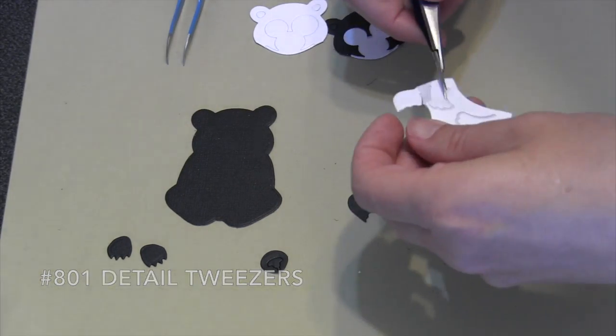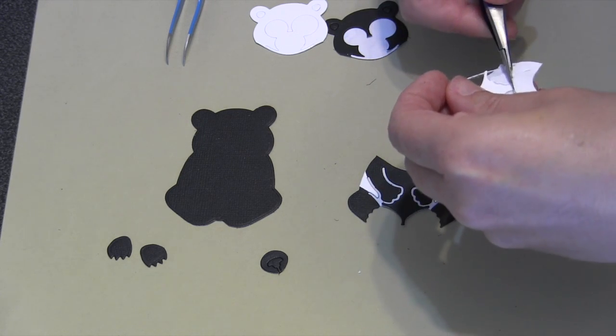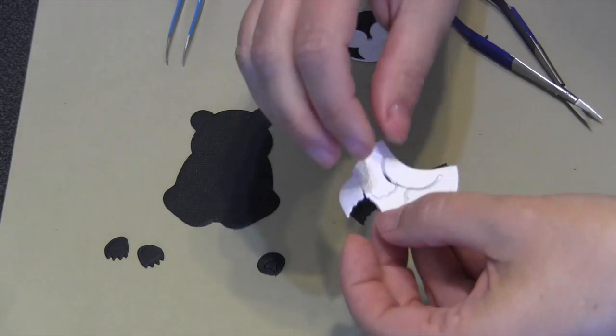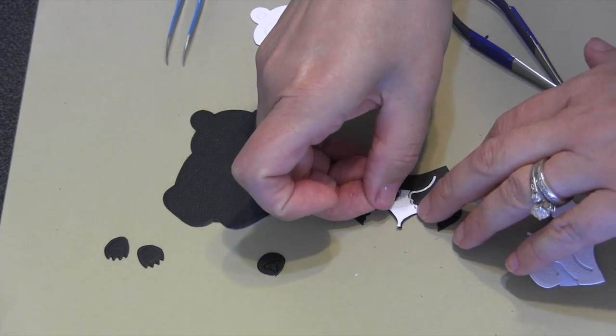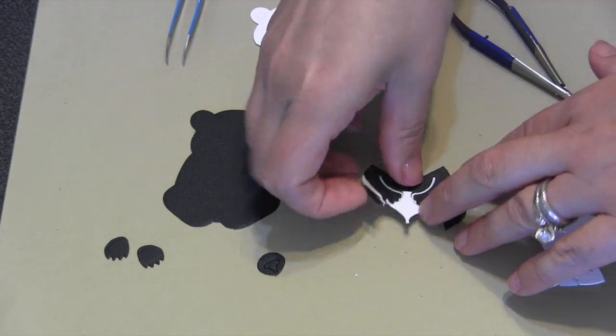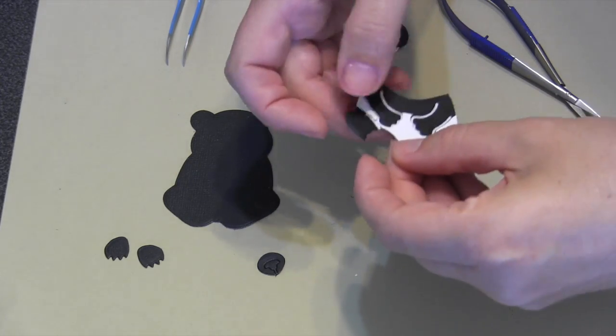Now I'm going to need another piece from the white detail layer, which is the area through his belly area. So I'm just going to snip right there across the paws and remove just that little section in the middle that will change that whole middle area to white.